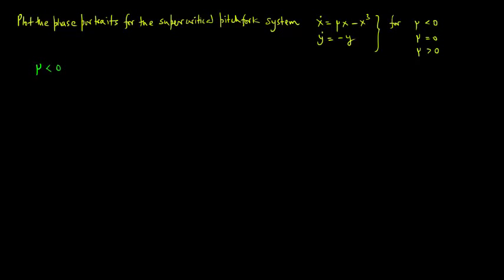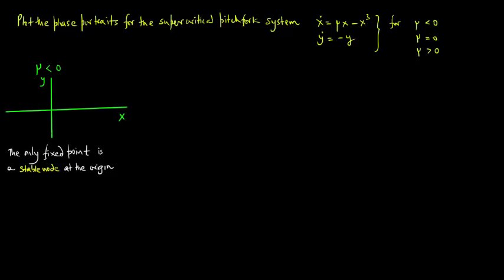Consider mu less than 0. Here the only fixed point is a stable node at the origin, so we have a relatively straightforward phase portrait. Plotting y versus x, we have a stable node at the origin.